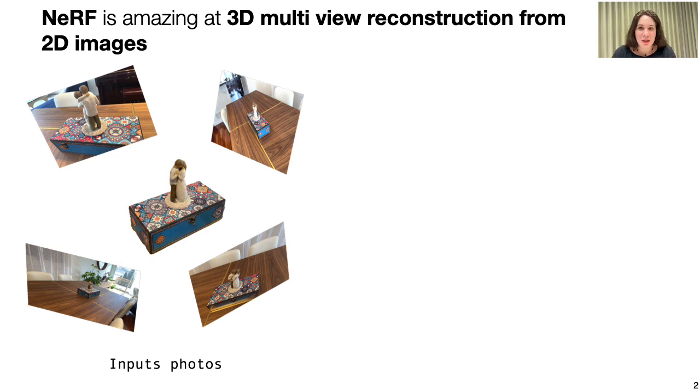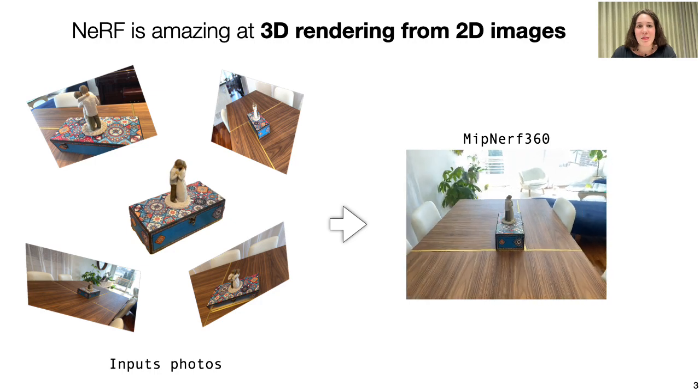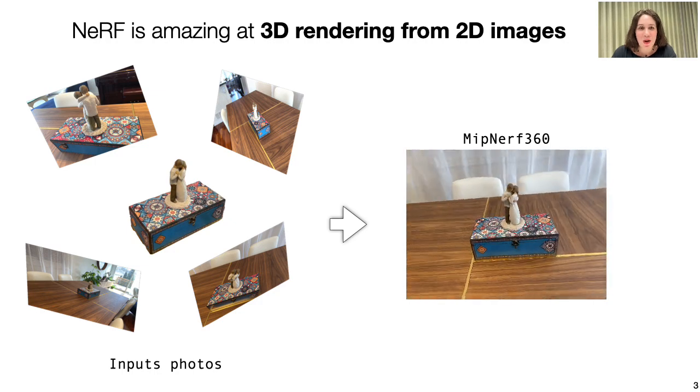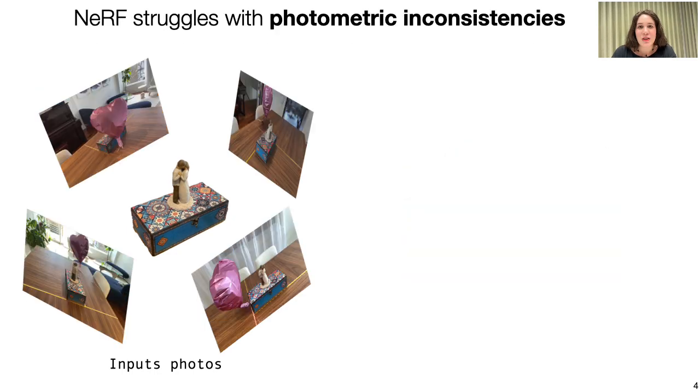So given a set of images, methods like MipNRF 360 can perfectly render the scene from all new viewpoints. But if you are given bad images, you get bad results.